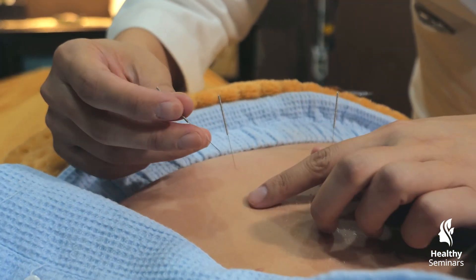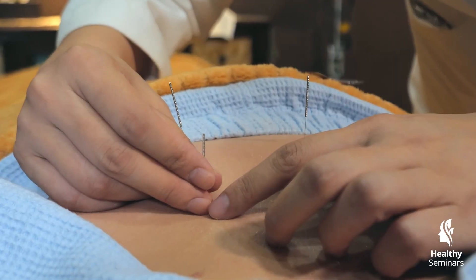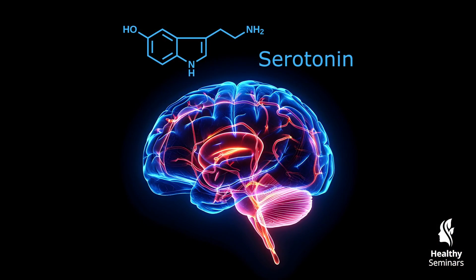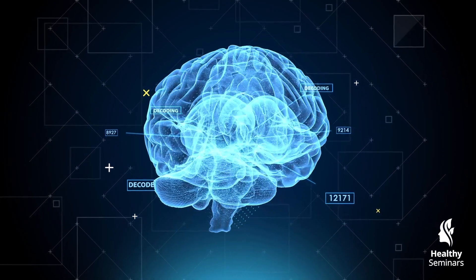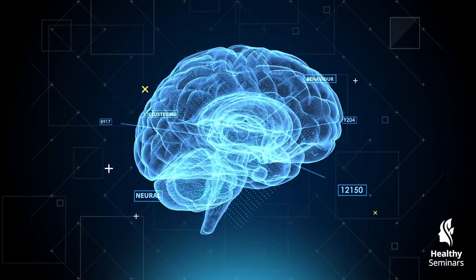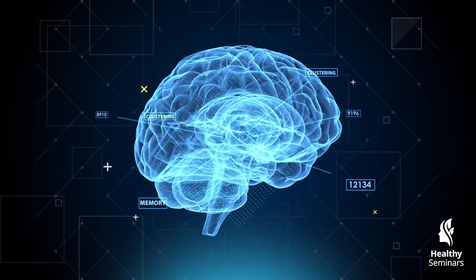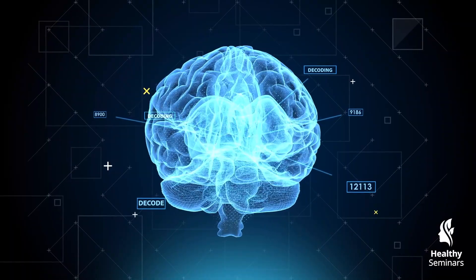In addition to mood regulation, acupuncture-induced serotonin release plays a vital role in pain modulation. Serotonin is a key component of the descending pain inhibitory system, particularly in the periaqueductal gray region of the midbrain, where it interacts with opioid pathways to dampen pain perception. Acupuncture's ability to stimulate serotonergic and endorphin-mediated pain inhibition helps explain its effectiveness in treating fibromyalgia, migraines, and neuropathic pain.